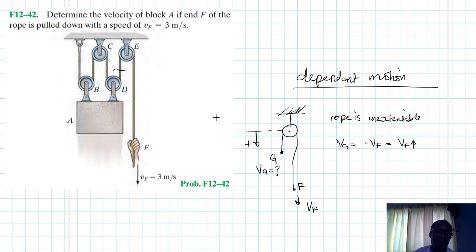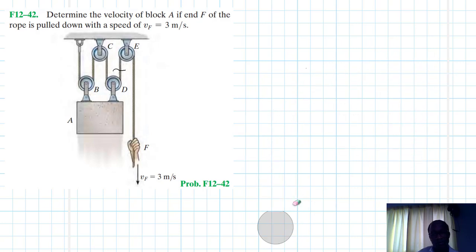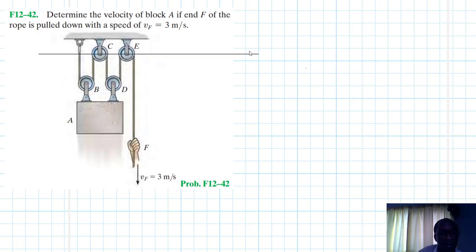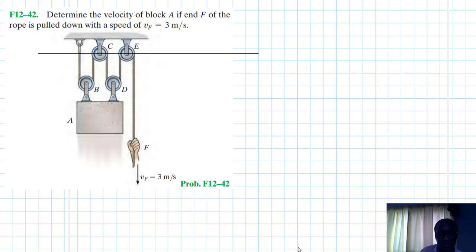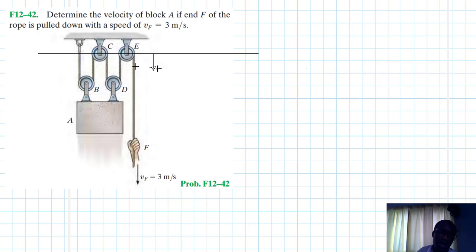Now let's look at the single rope that goes through four pulleys. First, we define the fixed reference point. Then we choose our positive reference for velocity — going down is positive. Since this is a single rope, we expect two one-dimensional displacement coordinates: one at point F and one at point A.